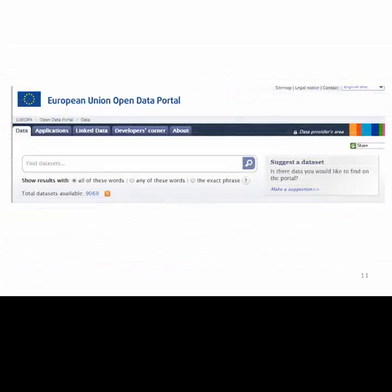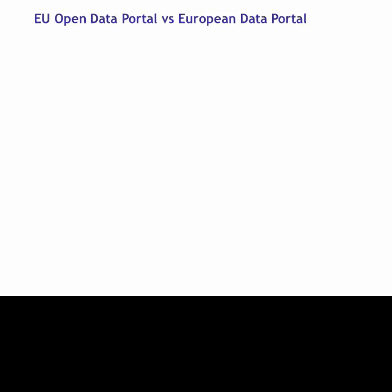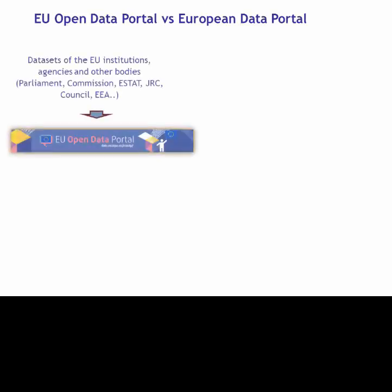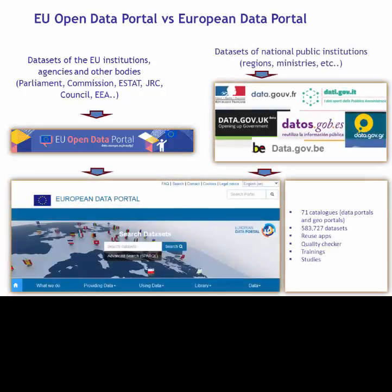So let's see what's happening here on planet Earth. Earlier we saw a slide of the European Data Portal. In this demonstration we are going to look at the European Union Data Portal. The European Union Data Portal is concerned solely with data from the EU institutions and agencies such as Eurostat, whilst the European Data Portal enables people to find data published by both national public institutions such as government ministries and the EU institutions.